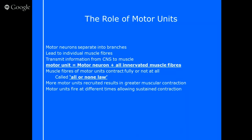You can see the differences in whether motor units are recruited or not. If you want a greater contraction, you just recruit more motor units, and if you want less of a contraction, you recruit fewer motor units. They fire at different times, allowing for sustained contraction — multiple motor units firing at different points in order to hold that contraction.